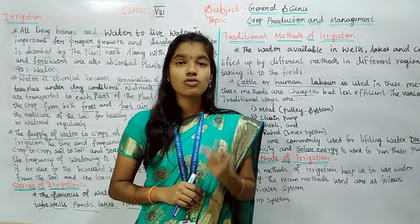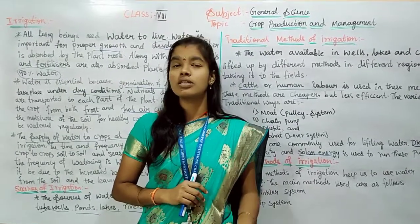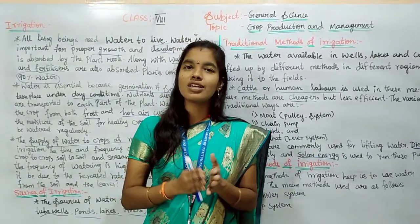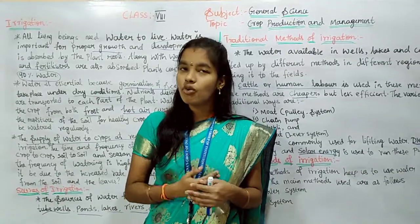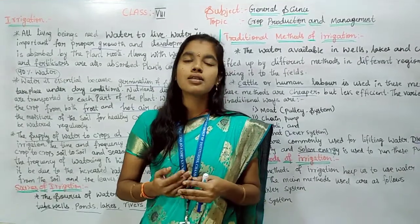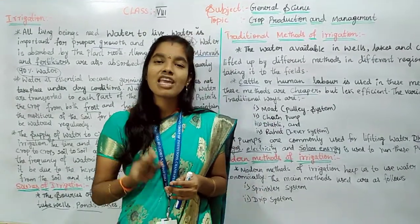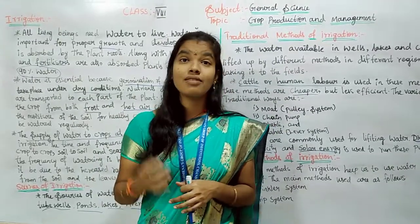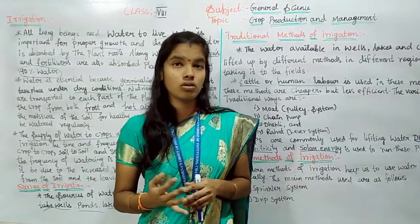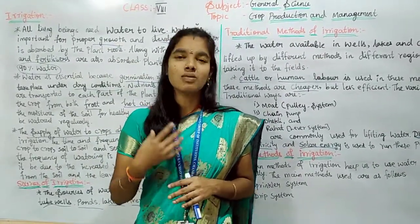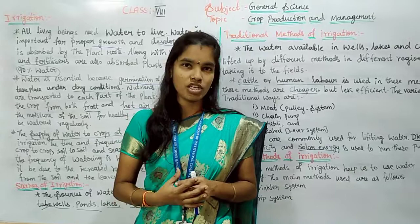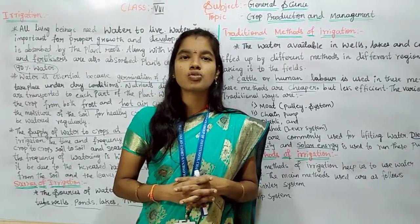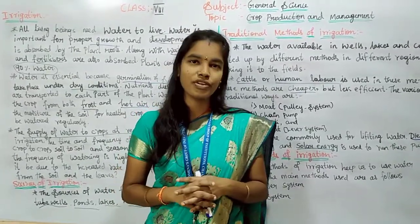Today we discussed irrigation, sources of irrigation, and methods of irrigation. In methods of irrigation we covered two types: traditional methods — moat, chain pump, dhekli, and rahat — and modern methods — sprinkler system and drip irrigation. In the next class we are going to discuss protection from weeds. Bye, children!